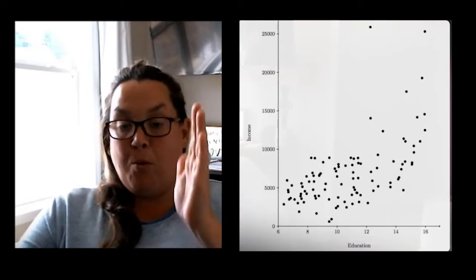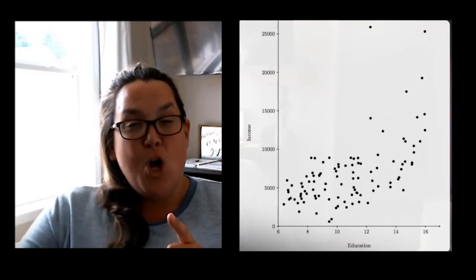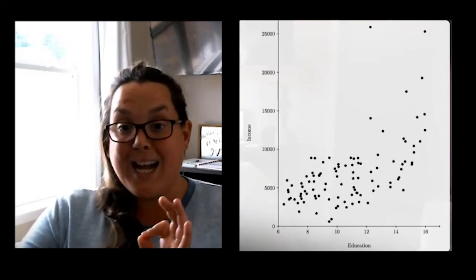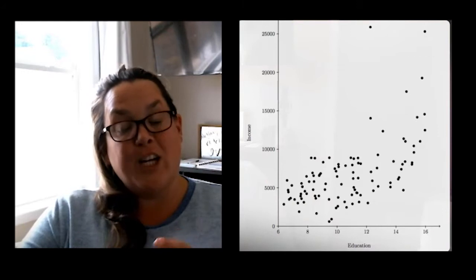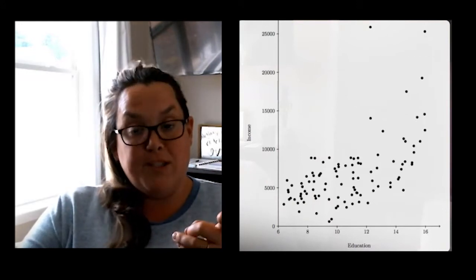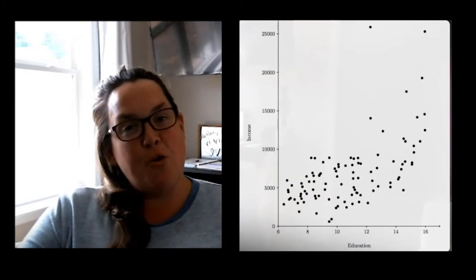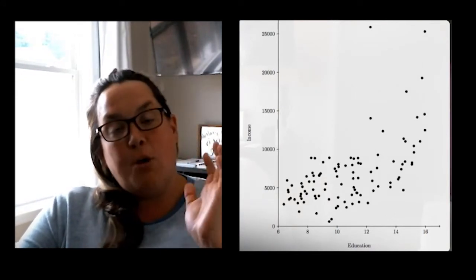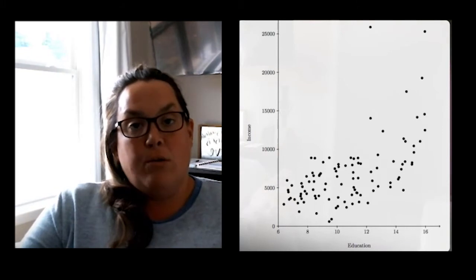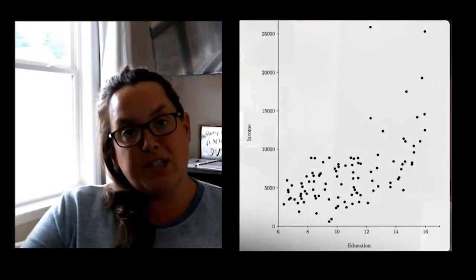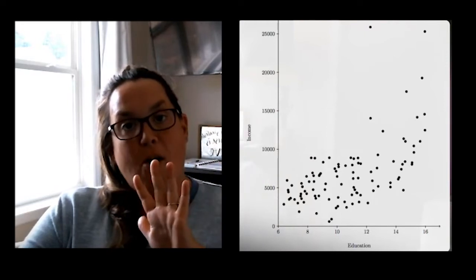The variable on the y-axis is the response variable. So here, our explanatory variable on the x-axis is education, and the response variable is the income. That intuitively should make sense to you because the more education you have, it tends to be the case, you make more money. Now, we're going to work at describing this particular scatterplot, and we're going to answer all five questions.